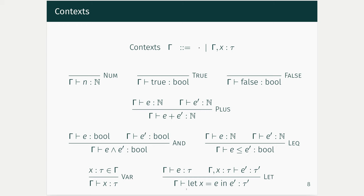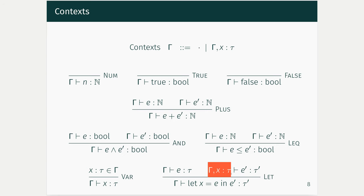A little more advanced is how do you type 'let x equals e in e prime' under the assumptions gamma. Obviously, e has to be well-typed under gamma. Whatever e's type is, that's the type we want to give to x. So let's put it into that context — we're going to say e had the type tau, and now we're going to assume that x has the type tau, since e's result gets bound to x. We'll type check e prime having the type tau prime in this enlarged context. In e, x is not in scope; but in e prime, x does occur in the context. This captures the thing you're used to from programming where you can't use a variable until it's been defined and is in scope.